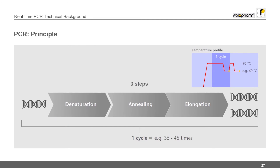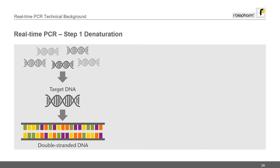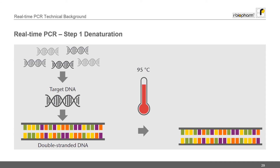To understand real-time PCR it is easier to begin with the principles of basic PCR. One PCR cycle consists of three steps: denaturation, annealing, and elongation. During the PCR run, changes in temperature are used to control the activity of the polymerase and the binding of primers. The reaction temperature is first raised to 95 degrees centigrade.